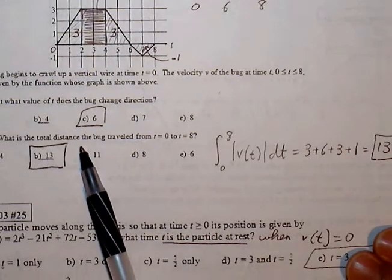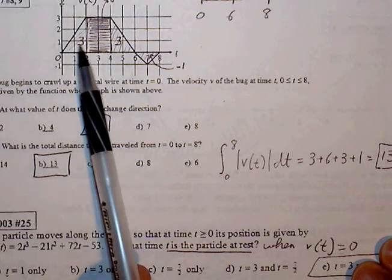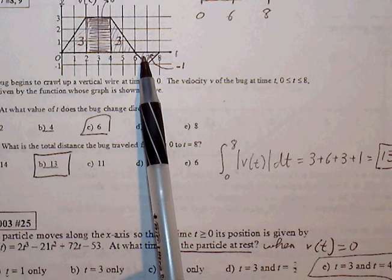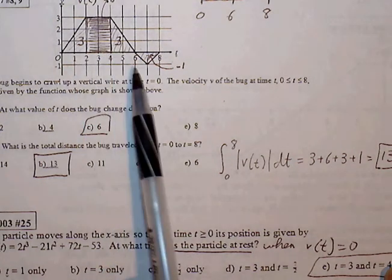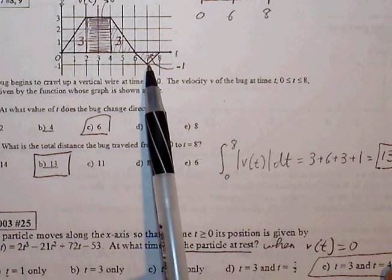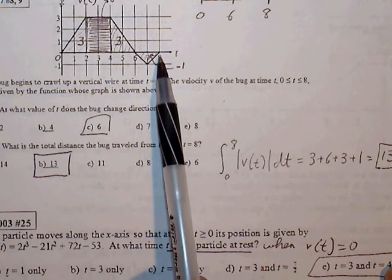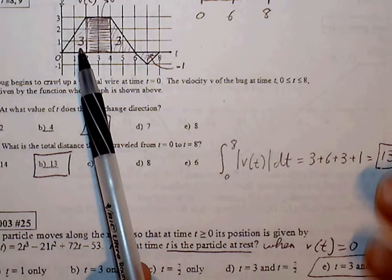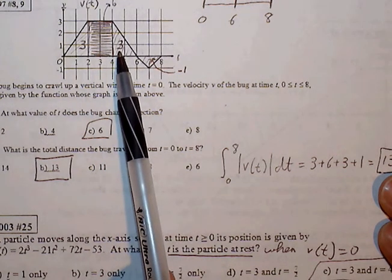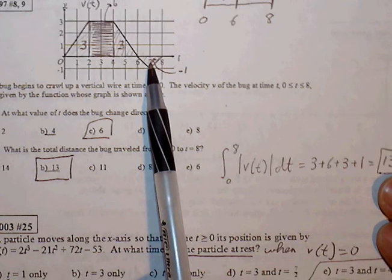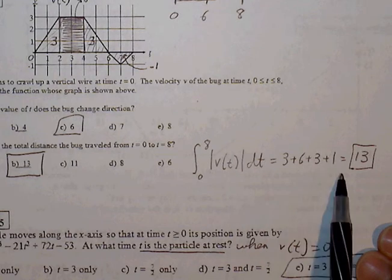Part number 9. What's the total distance that the bug traveled from 0 to 8? So with distance, we look at the area of each of the regions between the graph and the x-axis and we just total them up. The only thing we have to be cautious of is that with distance, we have to convert any negative area to positive. So this is area of a triangle gives us 3. Area of a rectangle is 6. Area of a triangle is 3. And area of this triangle is 1. So then we add those together. 3 plus 6 plus 3 plus 1 gives us 13.